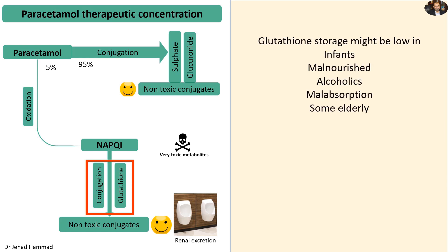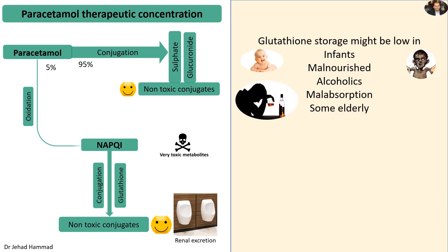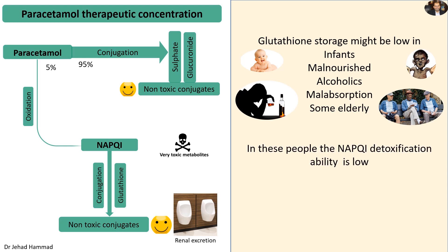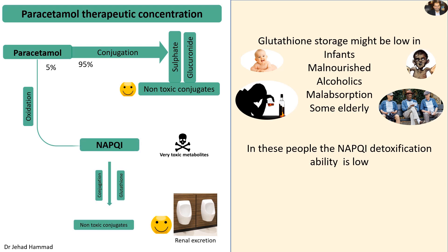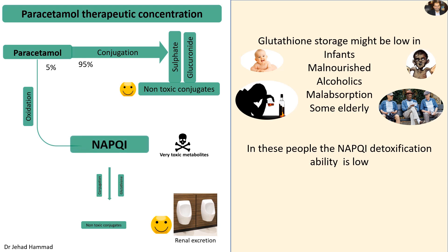It has been reported that glutathione storage is low in infants, malnourished individuals, alcoholics, those with malabsorption, and some elderly patients. In these people, the NAPQI detoxification ability is low. Therefore, as seen in the diagram, more NAPQI accumulates in the liver even at therapeutic concentrations of paracetamol.